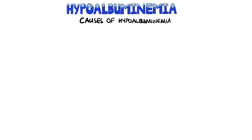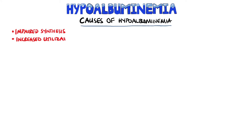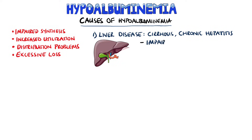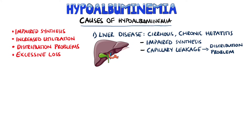Hypoalbuminemia can be caused by an impaired synthesis within the liver, increased utilisation by tissues, problems in distribution, or an increase in the loss of albumin. This occurs in liver disease, such as cirrhosis or chronic hepatitis, where there is a decrease in the production of albumin, as well as a distribution problem where more albumin leaks from the capillaries into the extracellular space.